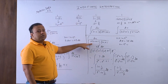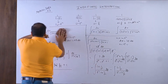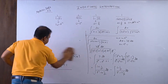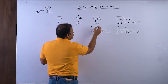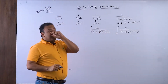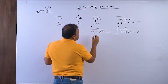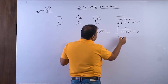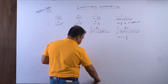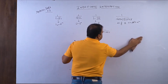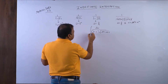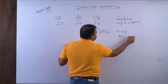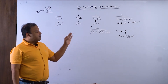Now we move to the third type: 1/(L·√Q). In this form, what we do is substitute L = 1/t. So for example, let x−1 = 1/t. Then differentiating, dx = −(1/t²)dt.